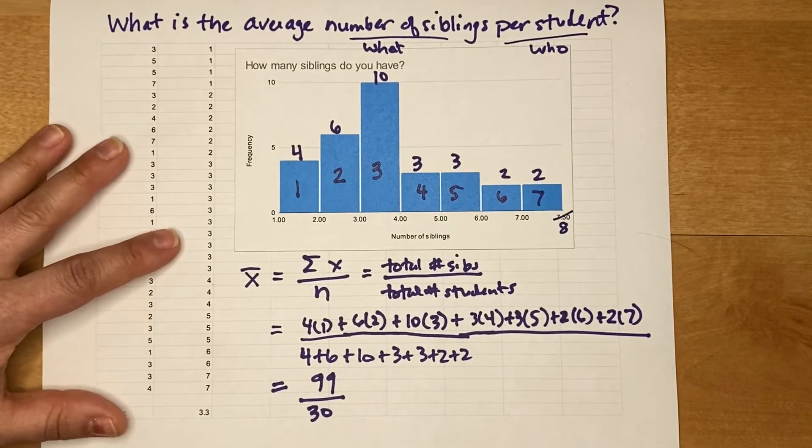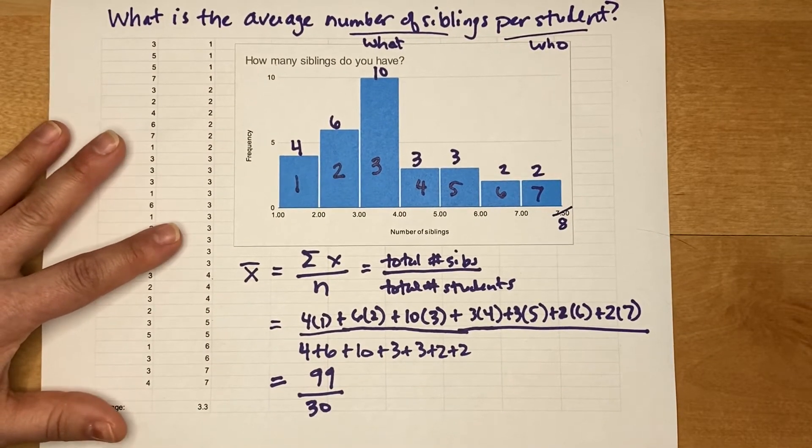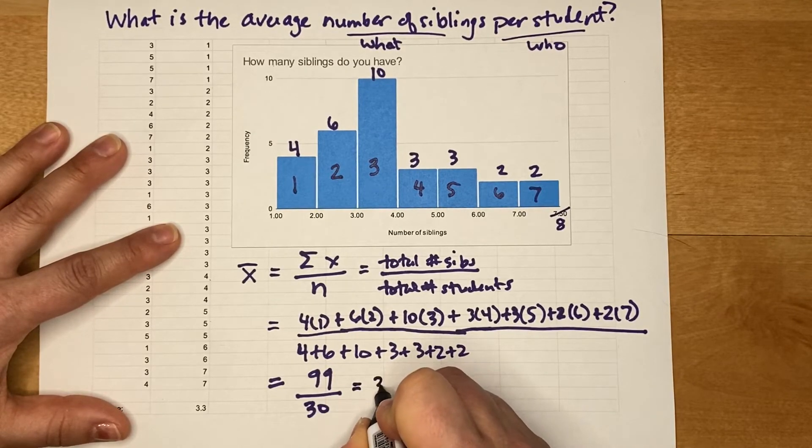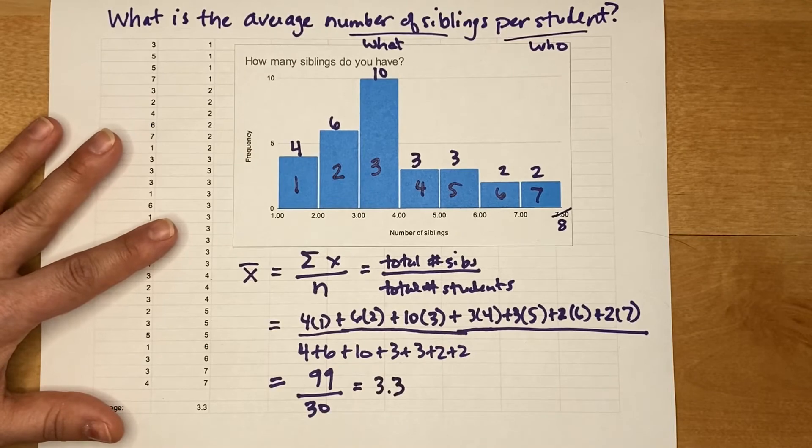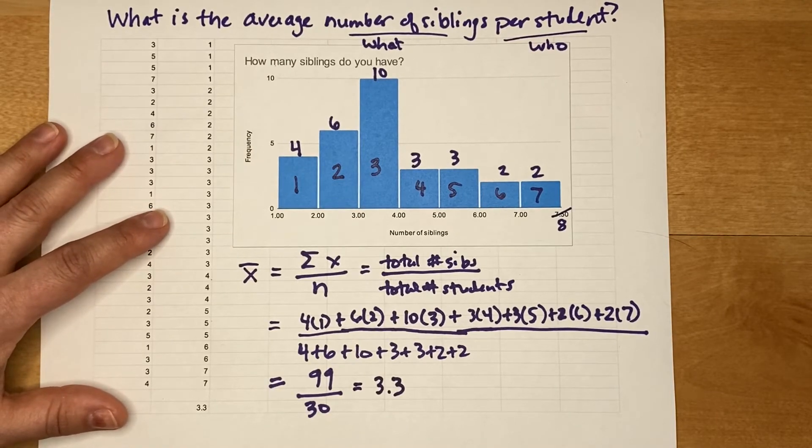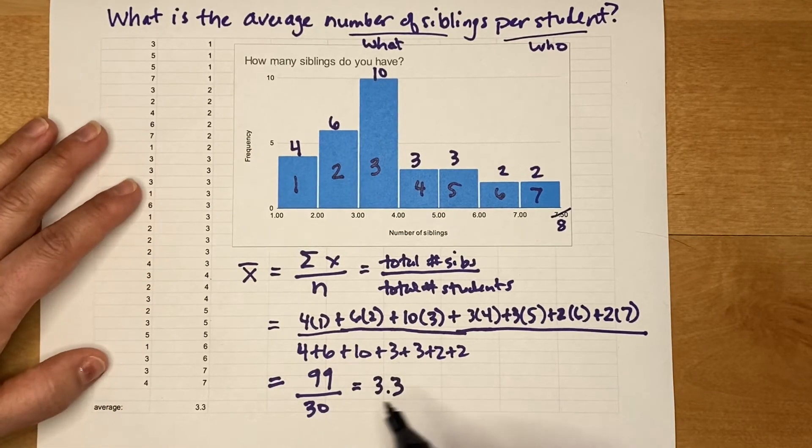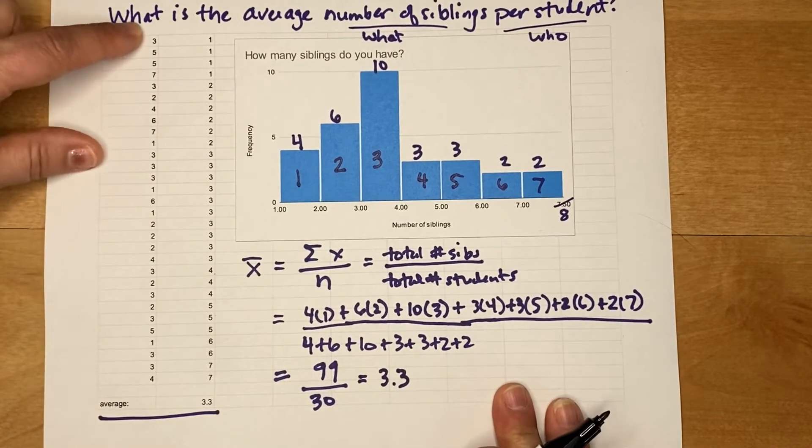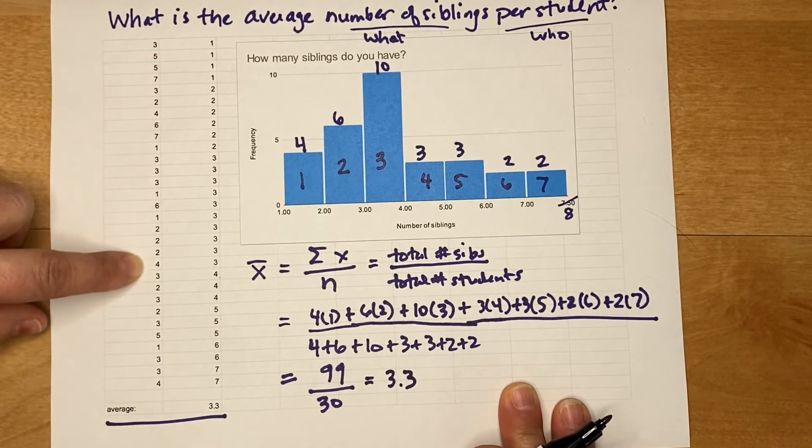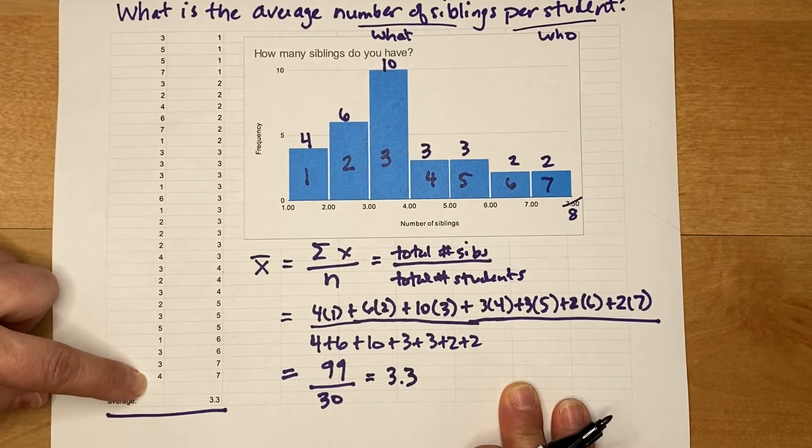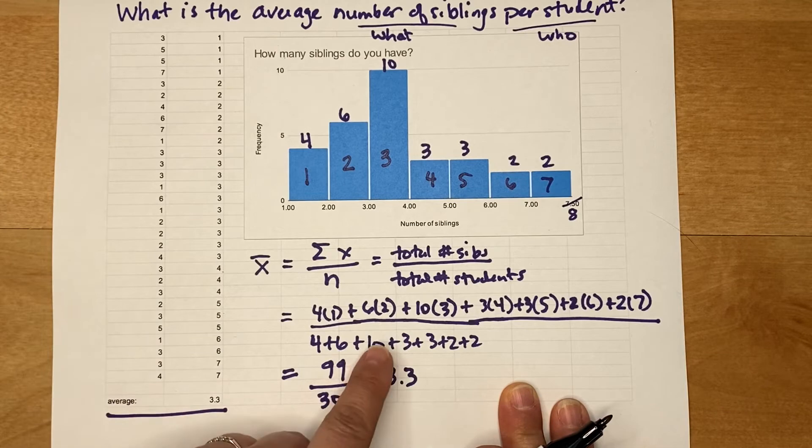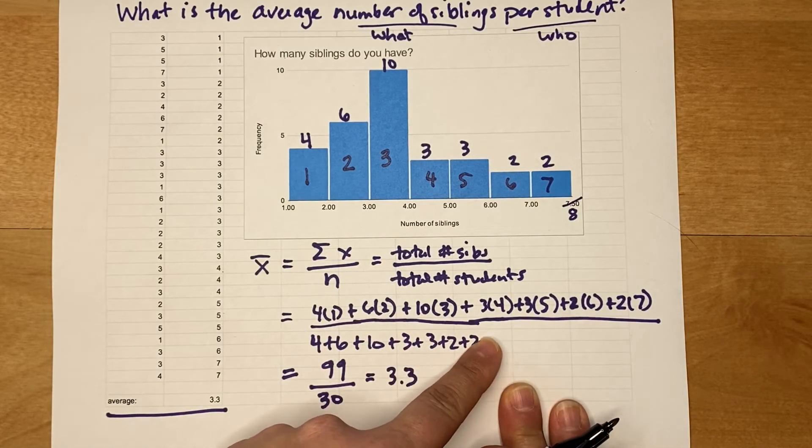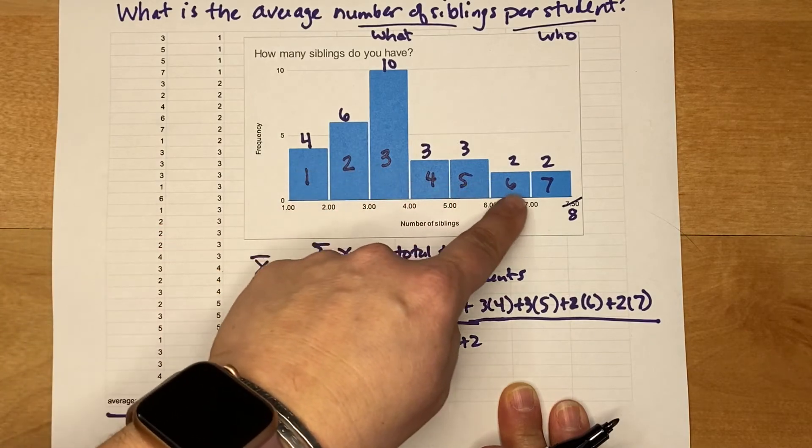All right, so the one last step to compute the average: 99 divided by 30 is 3.3. So this calculation does match my average which I computed ahead of time. I could have taken all of the numbers and just added them all up and then divided by 30, but a weighted average is kind of like an organized way of computing that average and it matches nicely to what we see in this histogram.